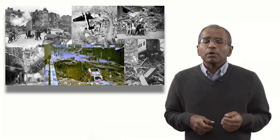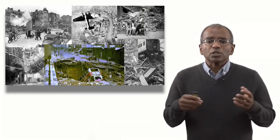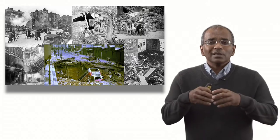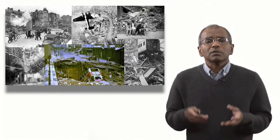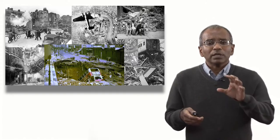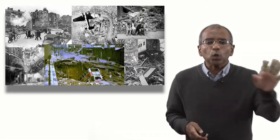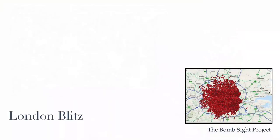A new collaboration between the University of Portsmouth and the National Archives has produced an interactive website where one can actually track individual bomb hits all over the Greater London Area. This is called the Bomb Sight. On the lower right you can see the cluster of bombs — something like 30,000 bombs hitting around the London area.